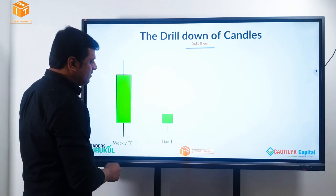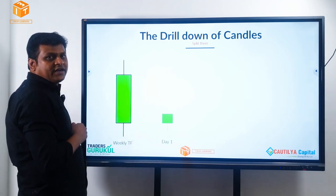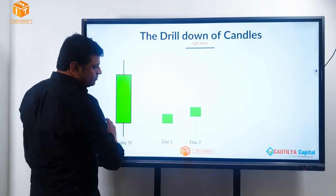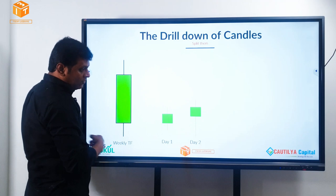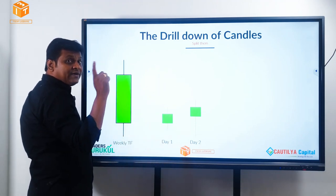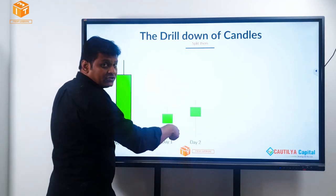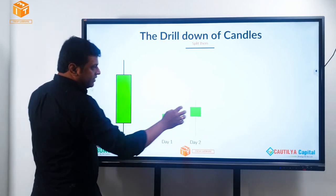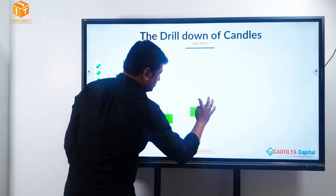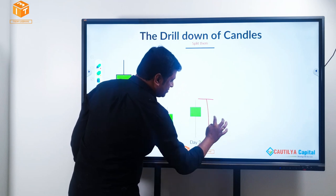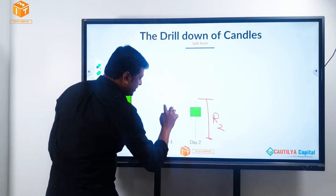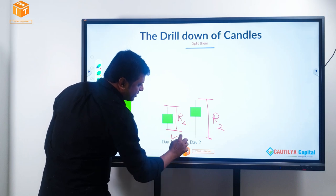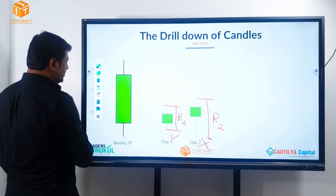Let's deep dive. Day 1 — what kind of a candle is this? Base candle. Day 2 — another base, ERC base, very big range. This is the range R2. What is the range here? R1. So this is a small range NRC base, this is an ERC base.